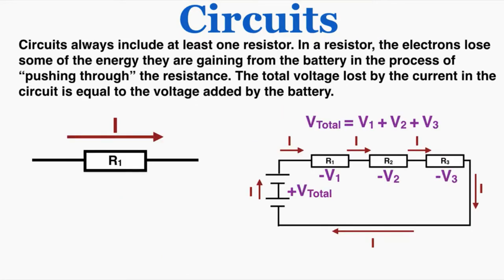Circuits always include at least one resistor. In a resistor, the electrons lose some of the energy they gained from the battery in the process of pushing through the resistance. The total voltage lost by the current in the circuit equals the voltage added by the battery. Every time the current moves through a resistor it loses some voltage — some electric potential — and the total lost across all resistors together equals the total voltage gained from the battery. So here, because there's a current going through resistor one, I would label this voltage drop V1 — it's losing that much voltage as it moves through that resistor.